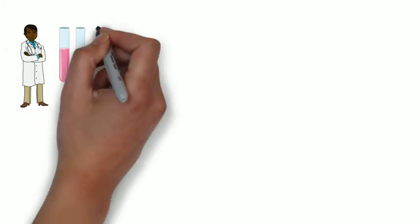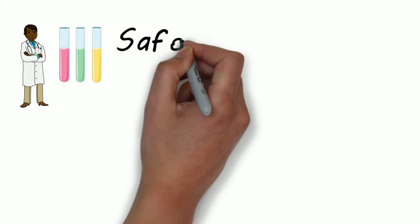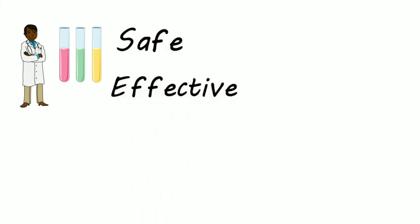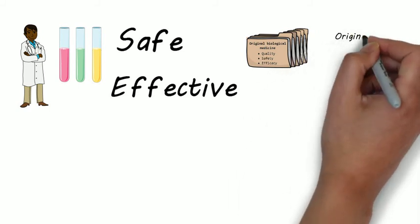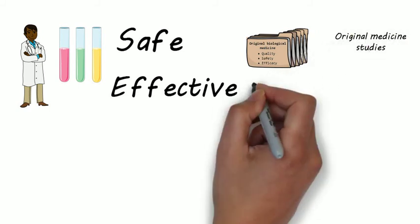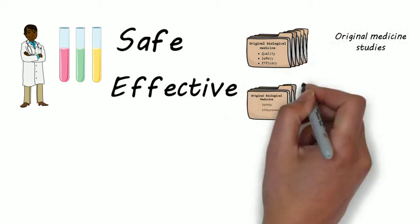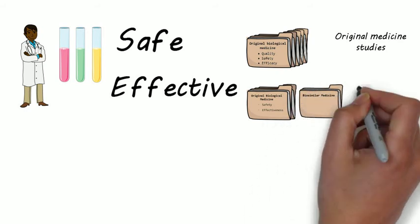The company that makes a biosimilar medicine must carry out studies to show that the biosimilar is as safe and as effective as the original medicine. Not all studies carried out with the original medicine need to be repeated with the biosimilar. This is because information on the safety and effectiveness of the original medicine is already available.